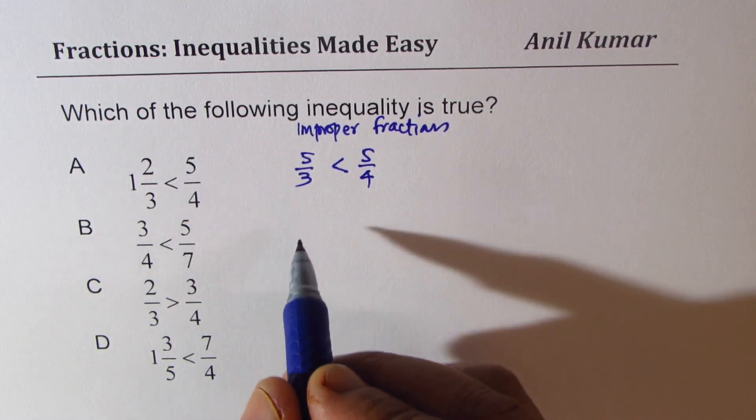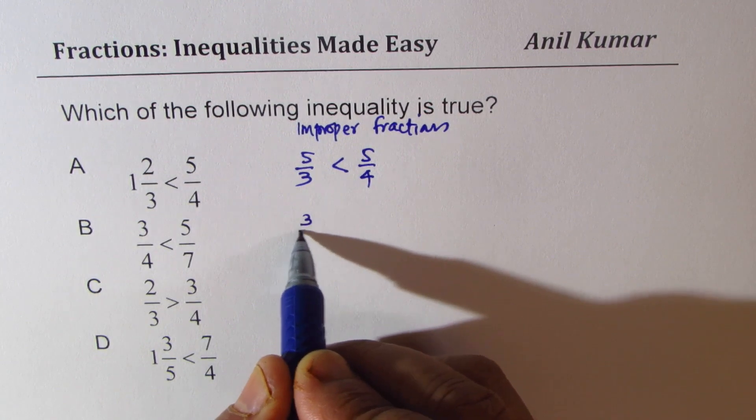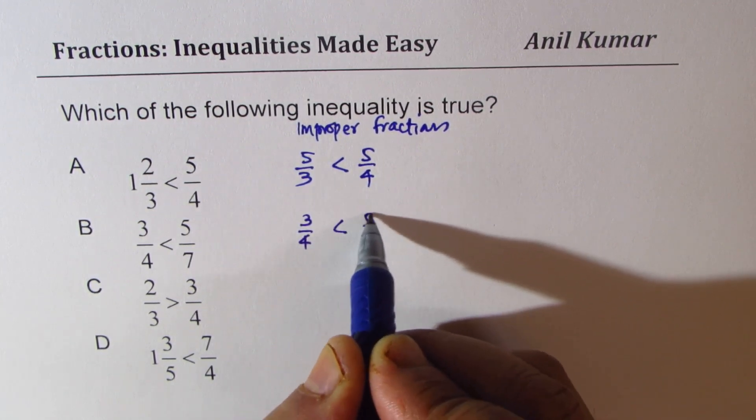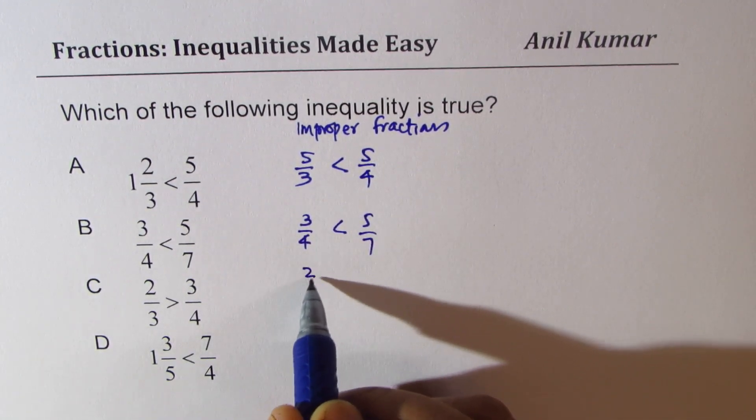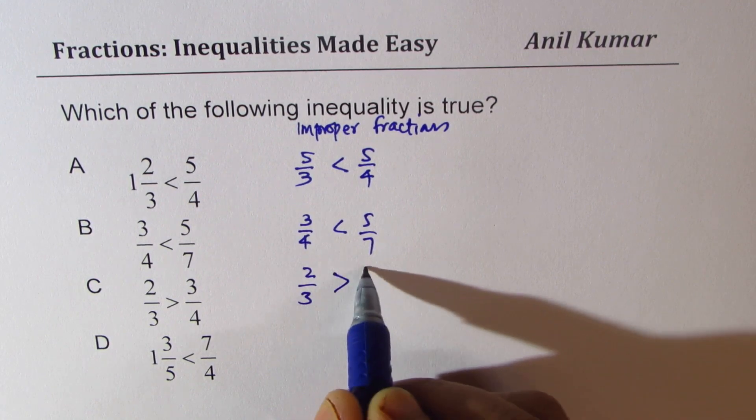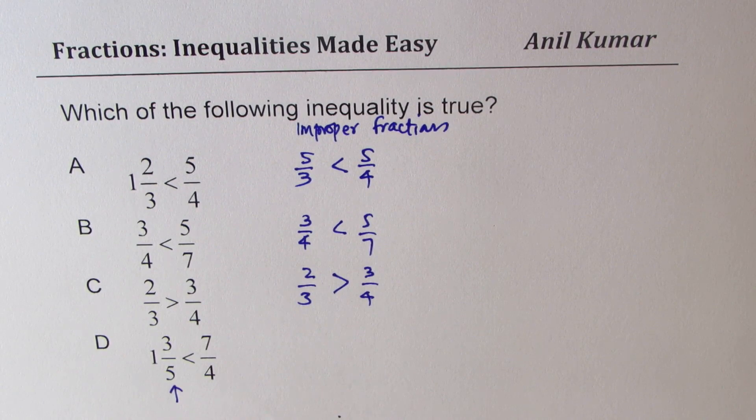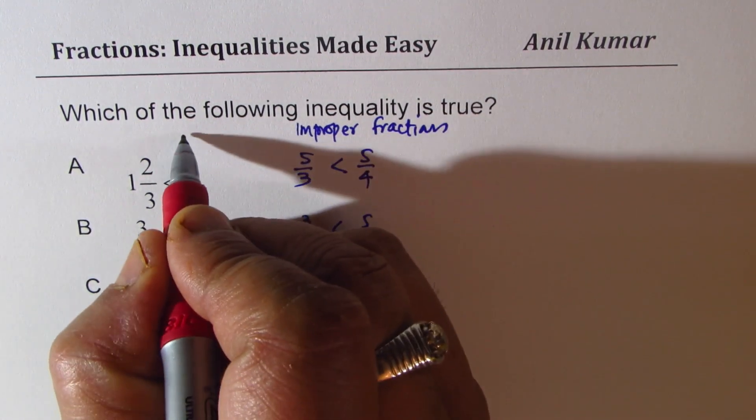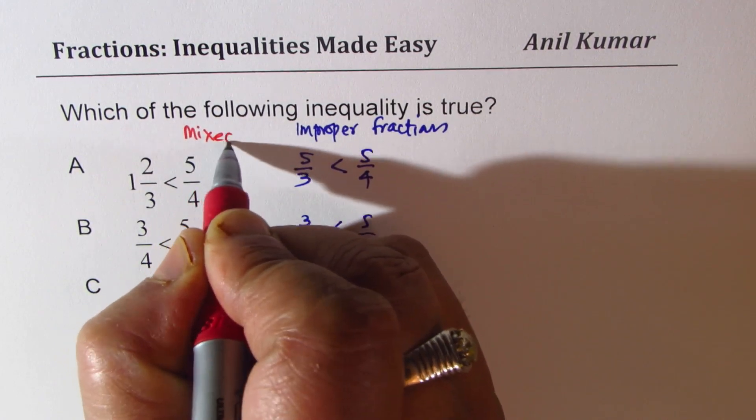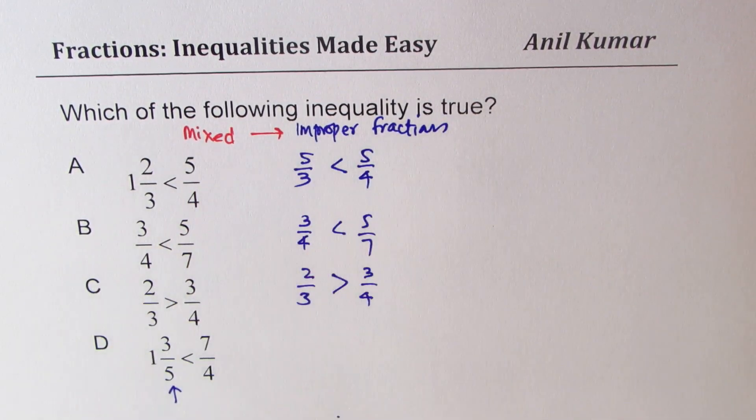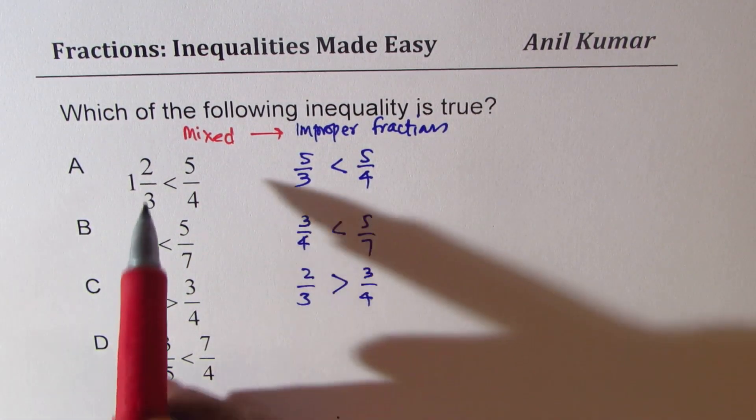This is already improper fractions, so we'll just keep it like this. We'll also keep this as such. So improper fraction is mainly for the mixed numbers. Basically, what I'm saying here is write mixed numbers to improper fractions. We'll work on only these two.